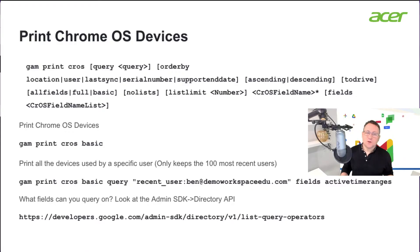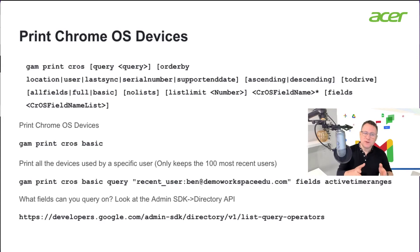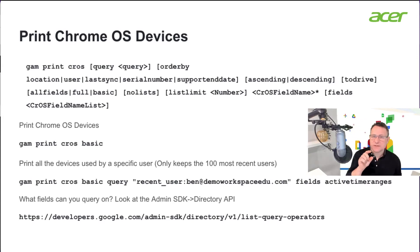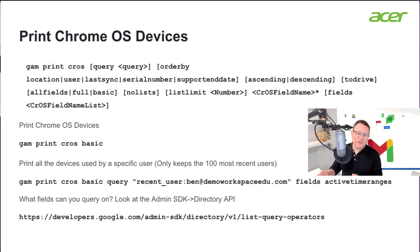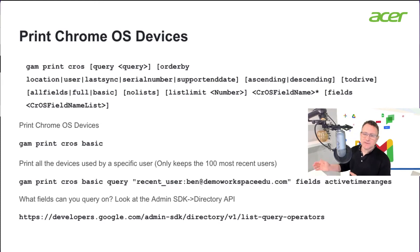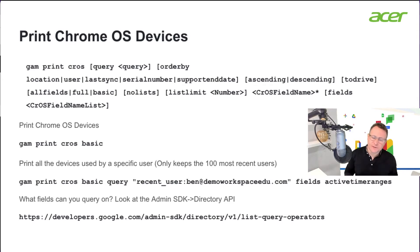Next, let's say we want to find all of the Chrome OS devices that have been used by a specific user. We could do `gam print cros basic`, then add a query with `recent_user` and their email address. Then we can specify a field — for example, `fields active_time_ranges` — which gives us information about when that user was using whichever devices are listed.